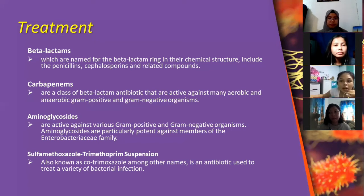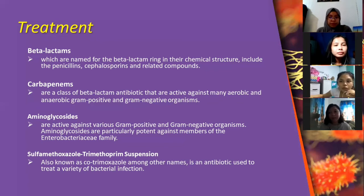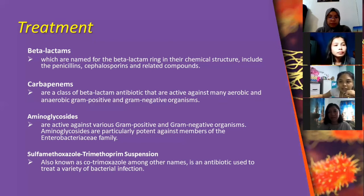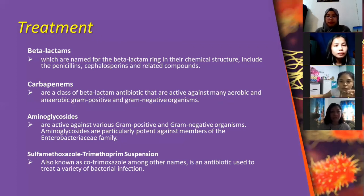Next are the aminoglycosides, which are active against various gram-positive and gram-negative organisms. Aminoglycosides are particularly potent against members of the Enterobacteriaceae family. They are also called bactericidal antibiotics because they kill bacteria directly by stopping bacteria from producing proteins, which are needed for their survival.